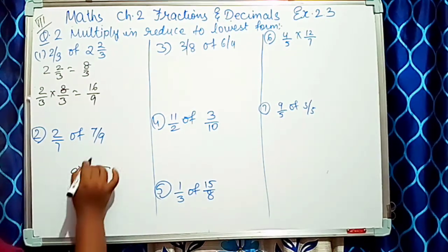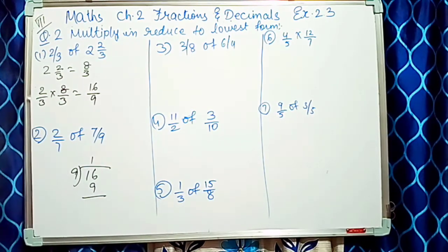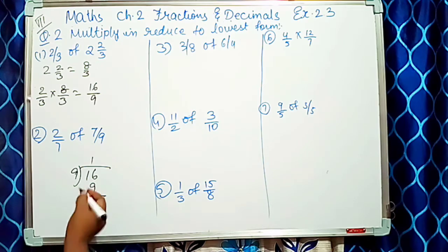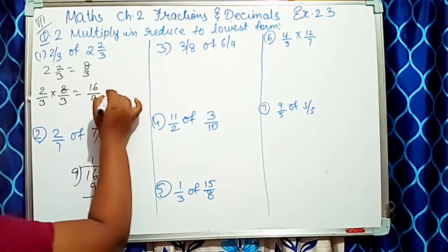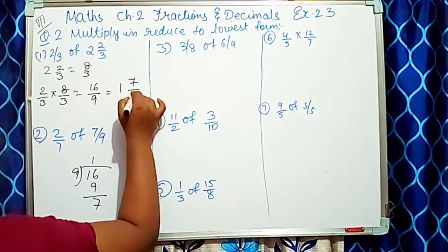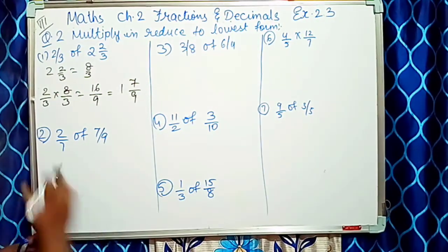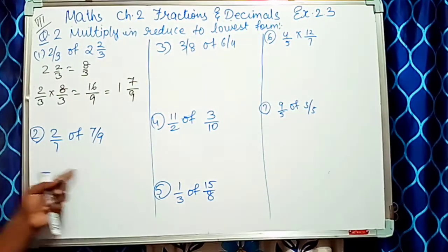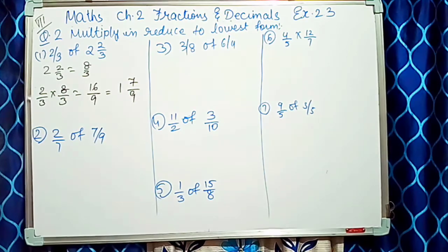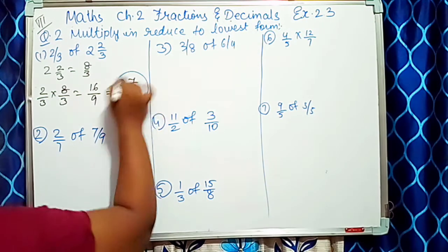Ab 16/9 ko division karenge. 9 ke table mein: 9×1=9, 9×2=18 — toh 9 sirf ek baar jaata hai. 16−9=7, so iska lowest form hai 1 7/9. First sum ka answer hai 1 7/9.